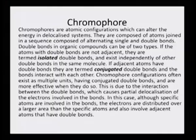It is the conjugated double bond system which creates a chromophore, and the chromophore is what creates the excitation and absorbs in the visible region. This is due to the interaction between the double bonds, which causes partial delocalization of the electrons involved in the bond. Although specific atoms are involved in the bonds, the electrons are distributed over a larger area than the specific atoms and also involve adjacent atoms that have double bonds — that is why there is a kind of delocalization of the electrons.